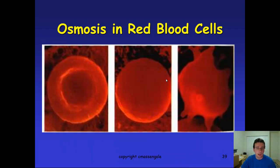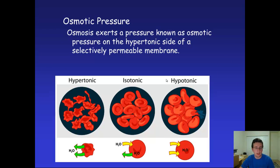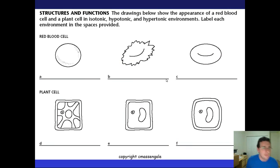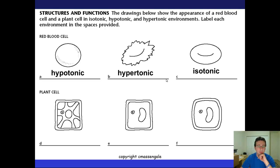Here are real pictures of what we talked about: the isotonic cell on the left, the hypotonic solution in the middle where the cell engorges, and the hypertonic solution where the cell shrivels. Looking at the animal cell diagrams: in scenario A the cell is shriveling, meaning it's in a hypertonic solution; in scenario B the cell is engorging, which is a hypotonic solution; and scenario C would be an isotonic solution.